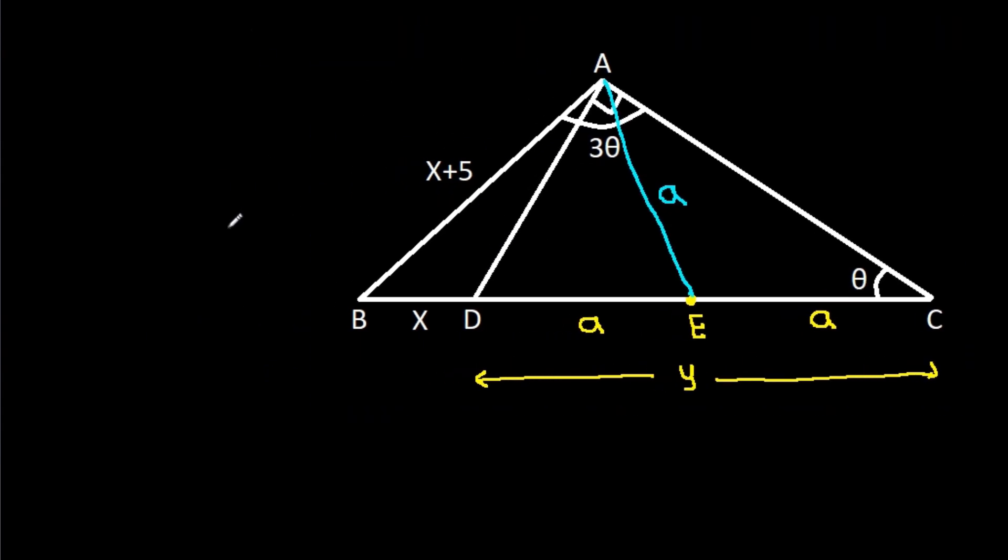Now, in triangle ACE, we have AE is a and CE is a. That means these two angles will be equal and this angle is θ. So this angle will also be θ.